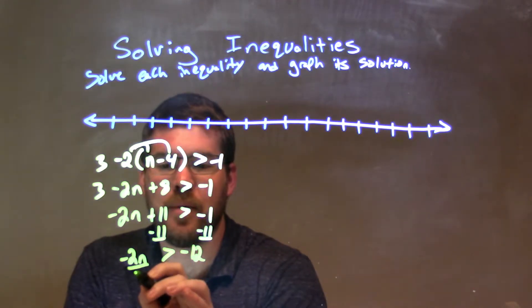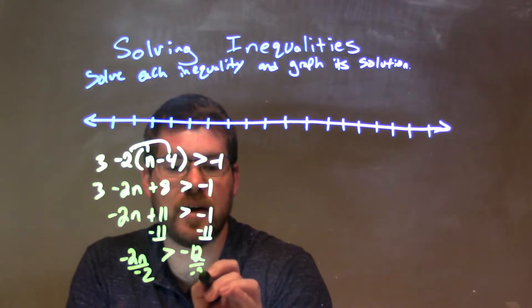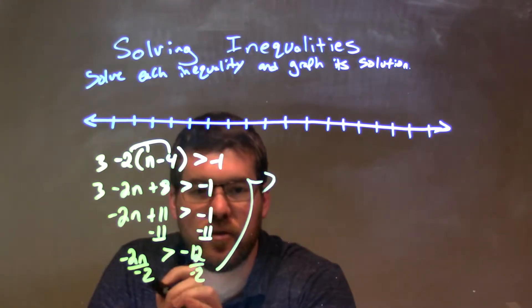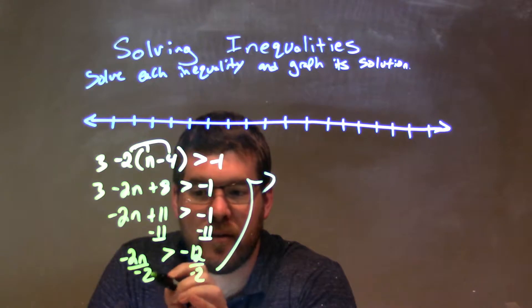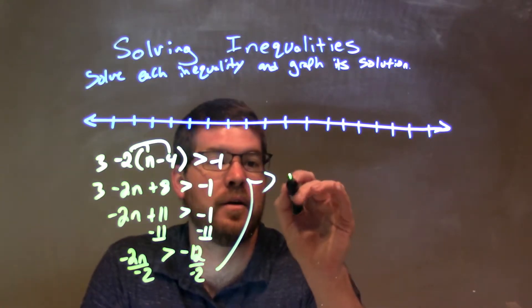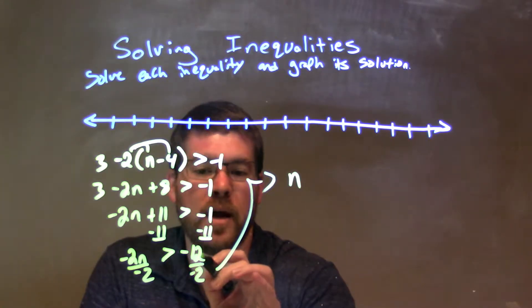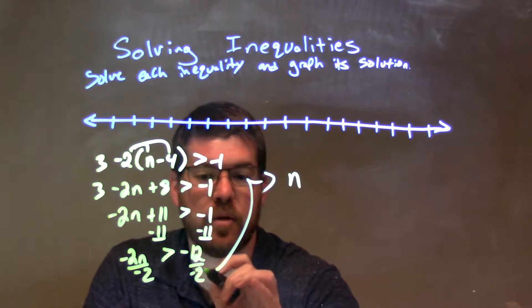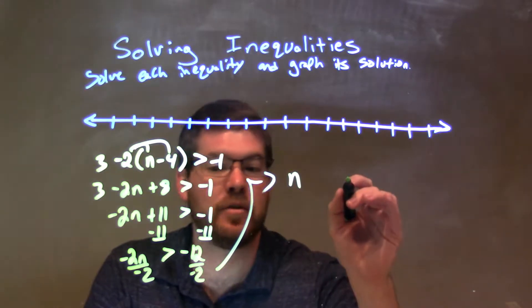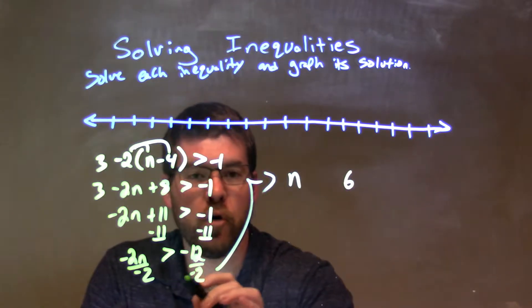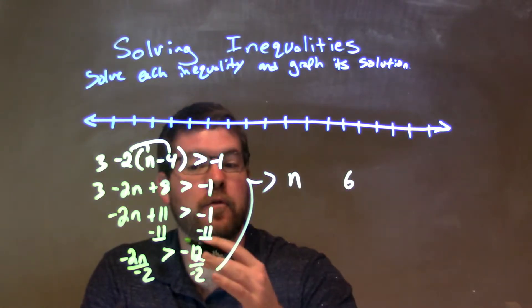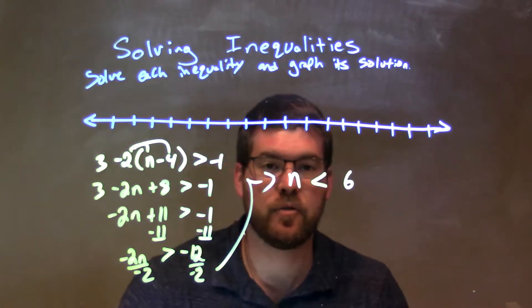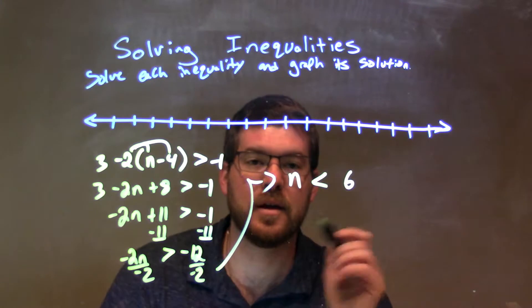Then, I need to divide by negative 2 on both sides to get n by itself. And this is where it gets tricky. Negative 2n divided by negative 2 is positive n. Great. And then, on the right-hand side, we have negative 12 divided by negative 2. Negative 12 divided by negative 2 is positive 6. But, we divided over the inequality, so the inequality flips from a greater than sign to a less than sign. And so, our final answer is just n is less than 6.